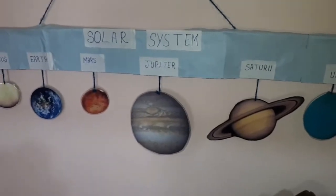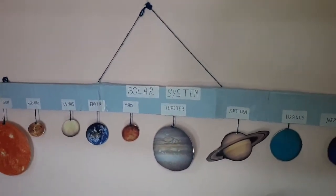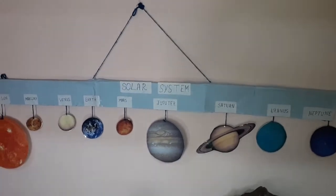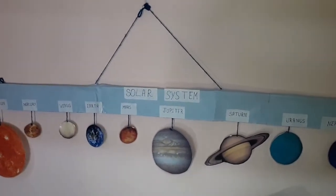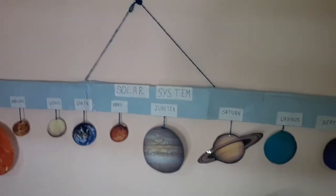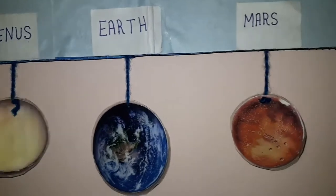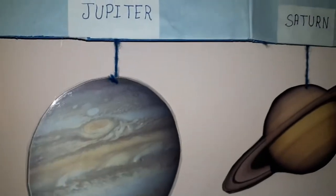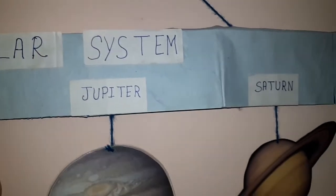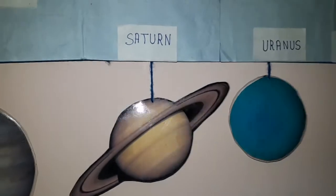You can also put it in school exhibitions. The model is pretty attractive and colorful. For this, you will need a cardboard, which you can cover with colored paper, and you can hang the planets — print out the planets, cut them out, and hang them.